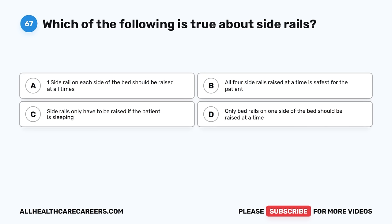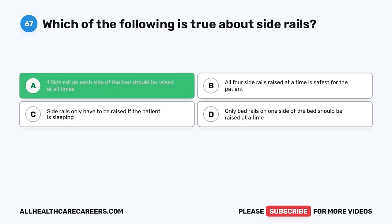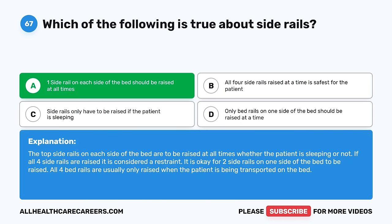Question 67. Which of the following is true about side rails? A. One side rail on each side of the bed should be raised at all times. B. All four side rails raised at a time is safest for the patient. C. Side rails only have to be raised if the patient is sleeping. D. Only bed rails on one side of the bed should be raised at a time. The correct answer is A. The top side rails on each side of the bed are to be raised at all times whether the patient is sleeping or not. If all four side rails are raised, it is considered a restraint. All four bed rails are usually only raised when the patient is being transported on the bed.